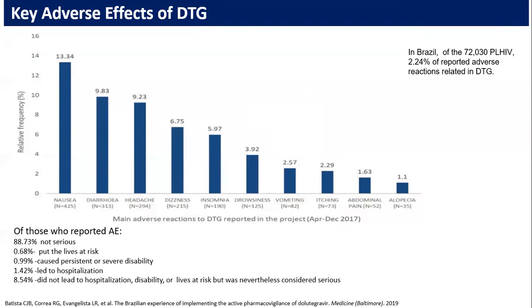Since dolutegravir is a new molecule in India — used only from 2020 — different studies are ongoing. We hope sufficient evidence will accumulate to say confidently whether it gives rise to irreversible hyperglycemia and diabetes, or if it is reversible. In a Brazil study of over 2,030 PLHIV, only 2.24% reported adverse reactions with DTG. The most common was nausea, then diarrhea, headache, dizziness, insomnia, drowsiness, vomiting, itching, abdominal pain, and alopecia.